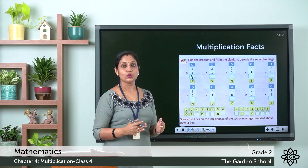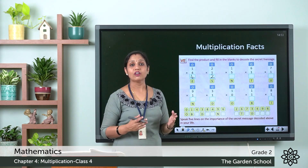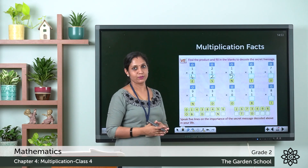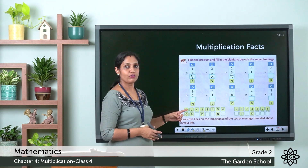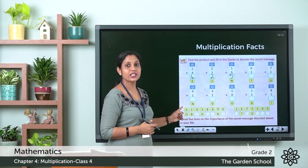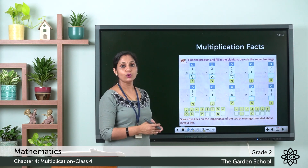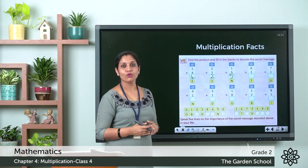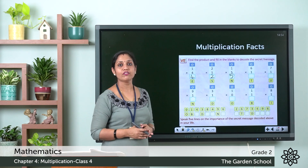Next we have 2 × 1, so 2 ones are 2. Then 1 × 5: 1 fives are 5. Now to find the secret message, you need to solve all the problems. Below each answer a letter is given. The number 0 corresponds to the letter O, the number 1 corresponds to the letter B, and the number 4 corresponds to the letter E.